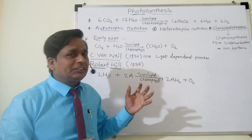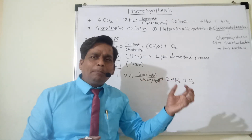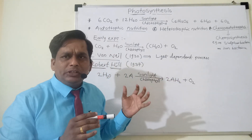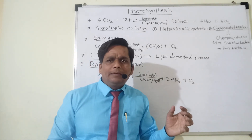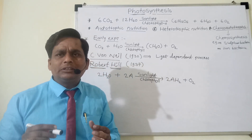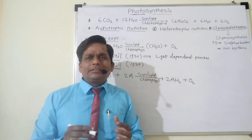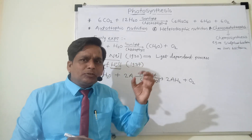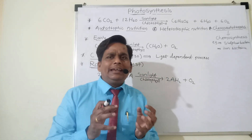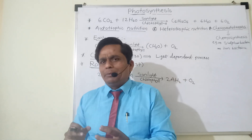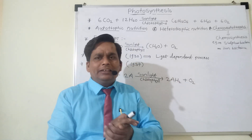Mostly photosynthesis is found in plants. It is the process in which a plant prepares food with the help of CO2 and water in the presence of sunlight and chlorophyll. Chlorophyll is one of the photosynthetic pigments — it is a plant pigment which can absorb sunlight. There are seven types of chlorophyll. Among them, chlorophyll A is called an essential pigment because it can absorb sunlight and convert light energy into chemical energy.